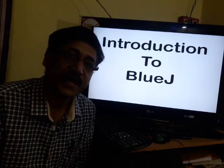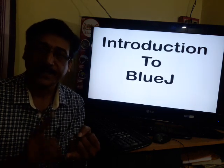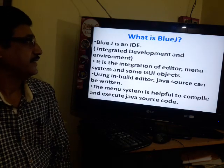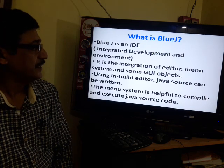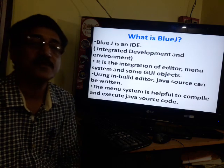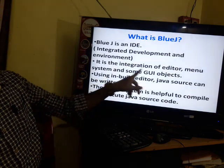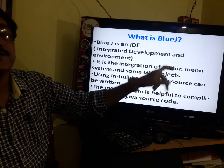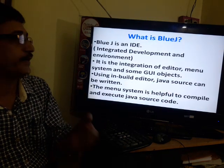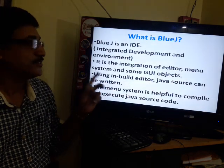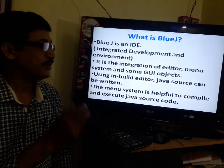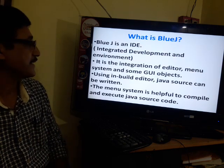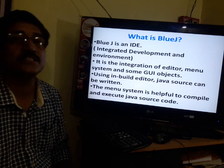BlueJay has lots of advantages. BlueJay is an IDE that consists mainly of one editor, one debugger, and one viewer. It is the integration of an editor, menu system, and some GUI objects. Your editor will help you write Java source code — you need not search for other editors, as it is embedded. The GUI objects will help you compile and execute the Java program without knowing the commands and syntaxes. The menu system is also helpful to compile and execute the Java source code.